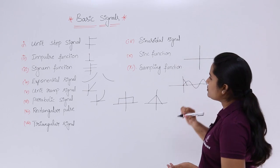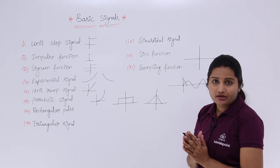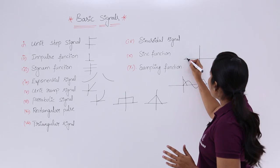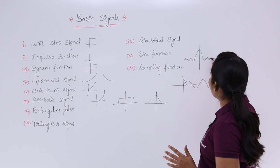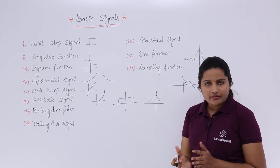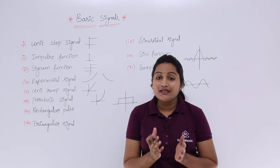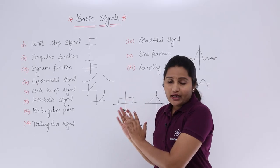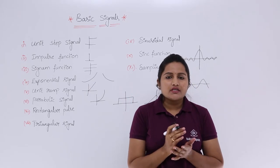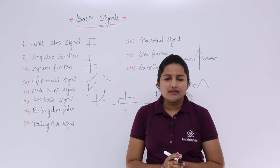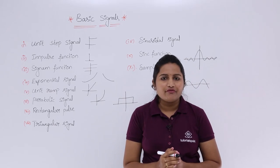The maximum voltage of the sinc and sampling functions occurs at t equal to 0. We have a definition for each and every signal, and from next class onwards we will take those definitions and apply them to the waveforms. This is the listing of basic signals — from next class onwards we will discuss each and every signal in detail.